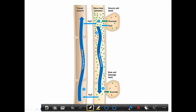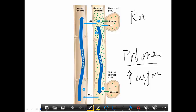Then we're down at this bottom level where we're at a root cell. We want to store that sugar in the root cell, but there's a problem because we've got lots of sugar in the phloem. The phloem has high sugar and the root cells have lower sugar.